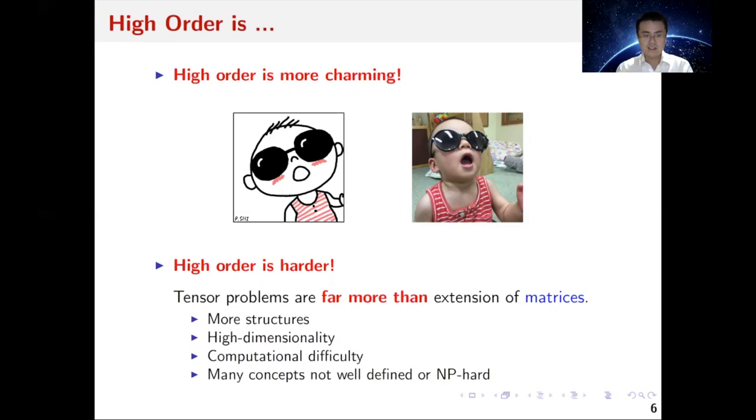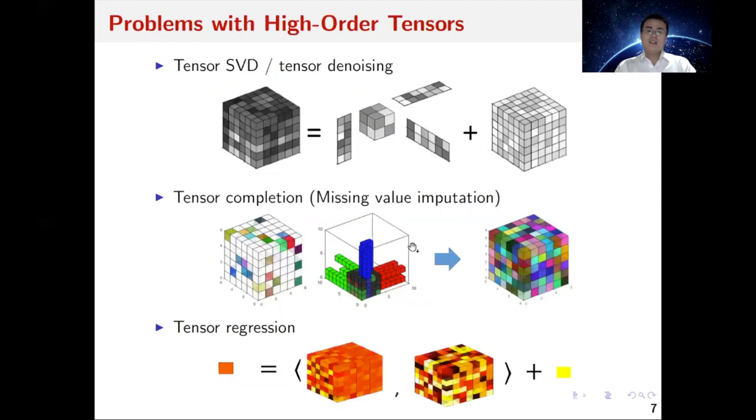Secondly, high-order tensors often come with high dimensionality and cause computational issues. Finally, many well-defined or well-established results and concepts for matrices, such as SVD or spectral norm or nuclear norm, are either not well-defined or hard to apply in general for tensors.